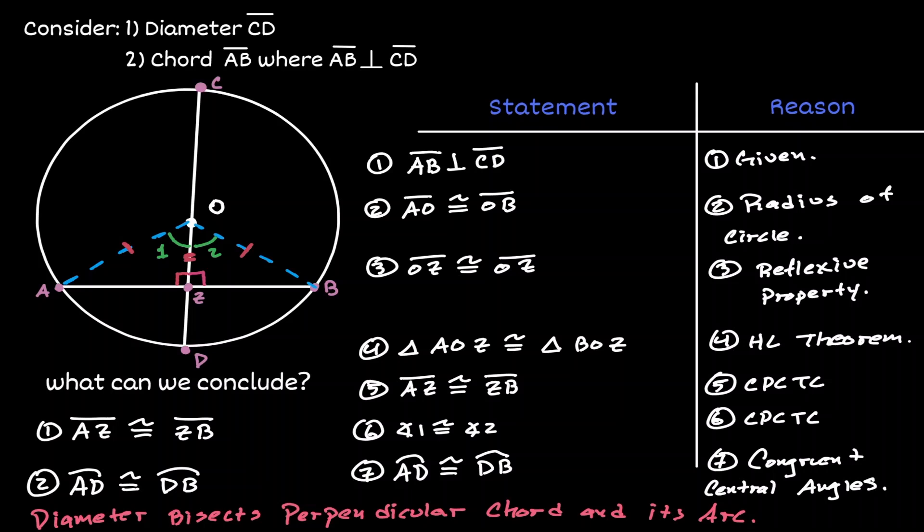So we have shown that both of those properties are true. Any diameter will always bisect any perpendicular chord and its arc as well.